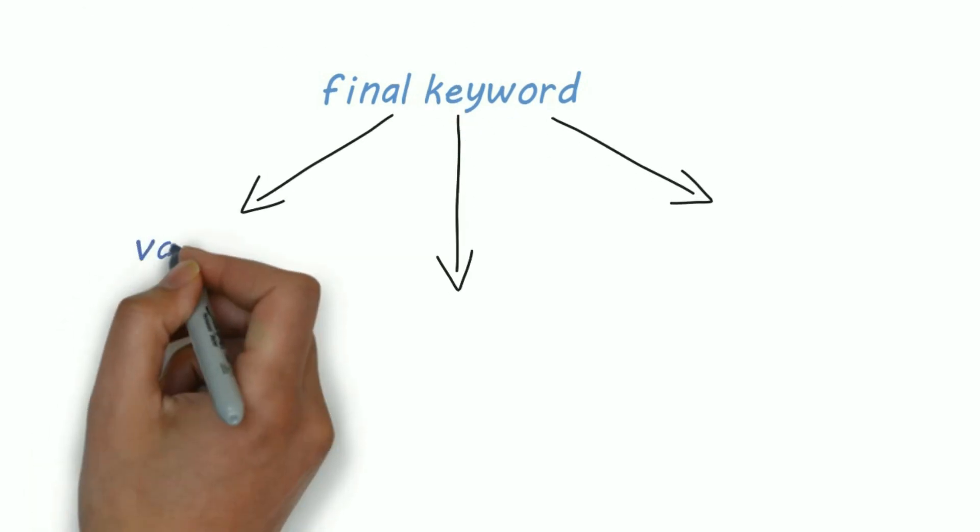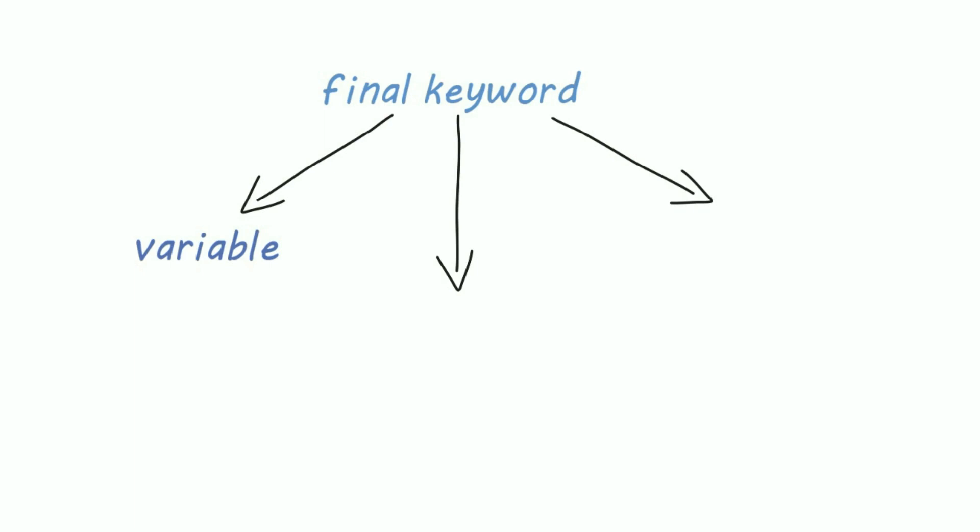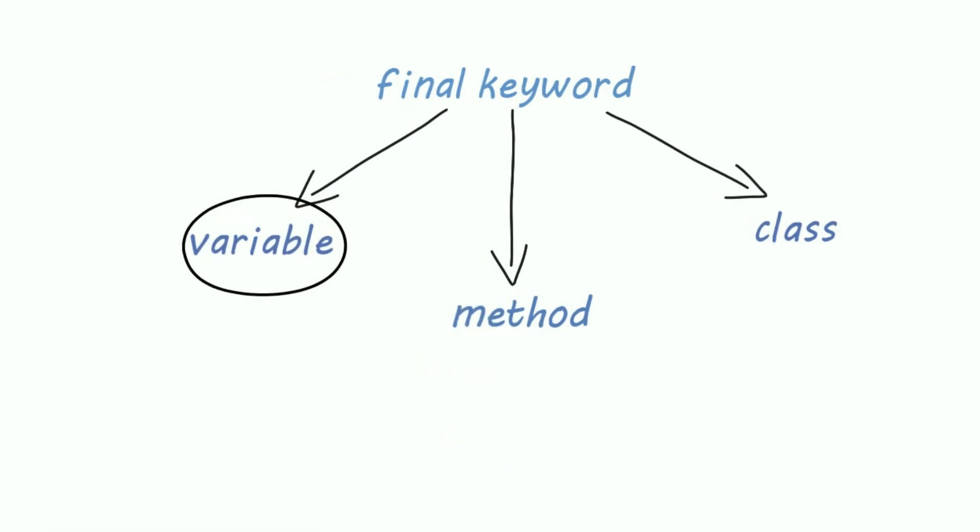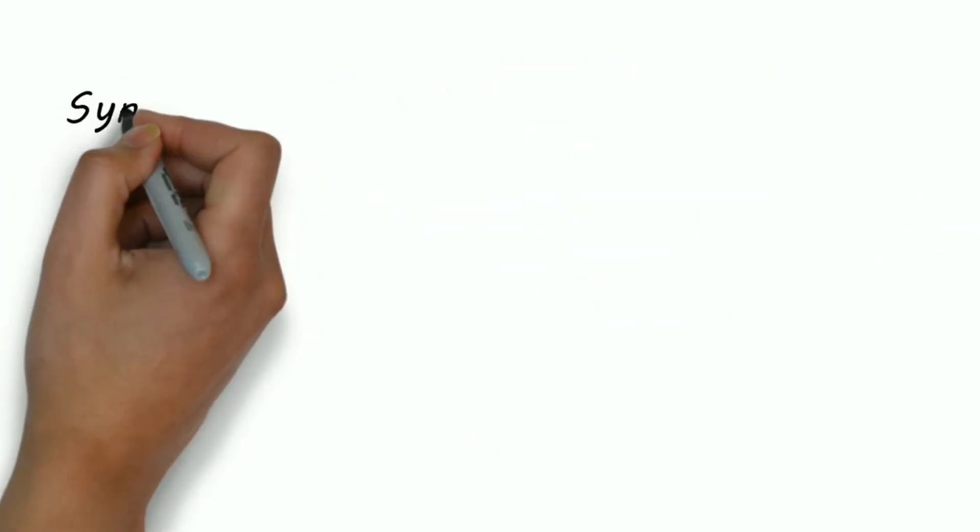Hi guys again, the final keyword is an easy concept. We can use the final keyword along with variables, methods, and classes. Let's first see what are final variables. The syntax is pretty simple, just add the final keyword in front of the variable.